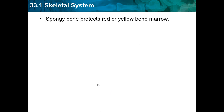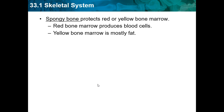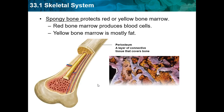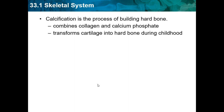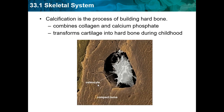Spongy bone protects red or yellow bone marrow. Red bone marrow produces blood cells and yellow bone marrow is mostly fat. Calcification is the process of building hard bone — it combines collagen and calcium phosphate, and transforms cartilage into hard bone during childhood. To speed up this process, kids drink a lot of milk, which provides calcium to strengthen bones.